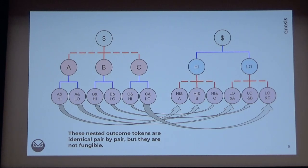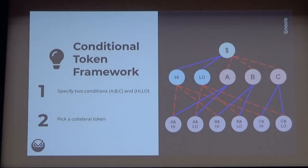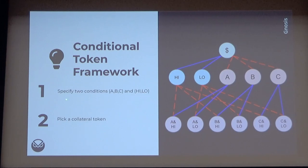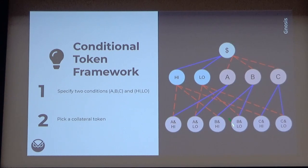So what we actually did is build a new framework called the Conditional Token Framework. You can specify any number of conditions — in this case, two: the first has three outcome slots A, B, C, and the second has two outcome slots: high and low. You pick the collateral token you put in and get one unified set of cross-product outcome tokens. You now get only one set of outcome tokens, and A-high and high-A are the same token.